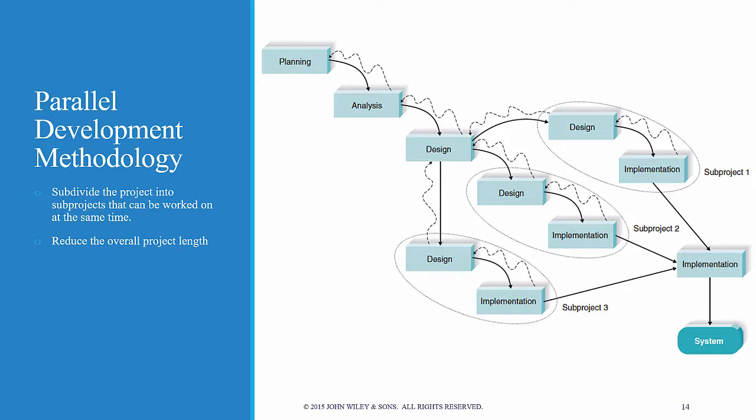One variant of the waterfall approach is the so-called parallel development methodology, where you subdivide the project into sub-projects that can be worked on at the same time, which often reduces the overall project length. As you can see in the picture, after the analysis phase, a general design for the entire project is developed, and then the project is divided into a series of sub-projects that can be designed and implemented in parallel. Once all the sub-projects are complete, there is a final integration of the separate pieces, and the system is delivered.